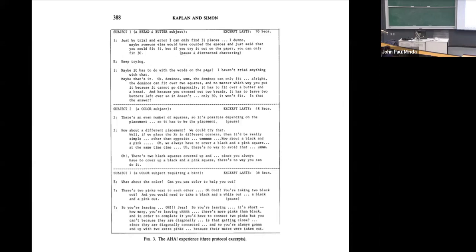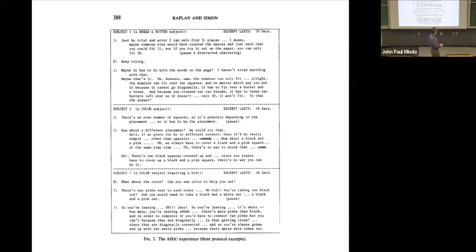Here are think-aloud transcripts from subjects. A bread-and-butter subject says: 'Just by trial and error I can find 31 places. Dominoes can fit over two squares — it cannot go diagonally, it has to fit over a butter and a bread. And because you crossed over two breads, it leaves two butters, so it won't fit. Is that the answer?' This subject solves it quickly. A color subject: 'There are two black squares covered up. Since you always have to cover a black and a pink, there's no way you can do it.' Another color subject required a hint: 'Oh God, you're taking two blacks away and you would need a black and a pink — so you're leaving...' and he gets excited when he finally figures it out.